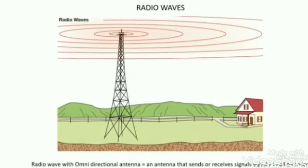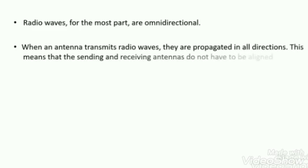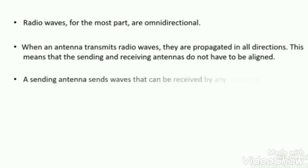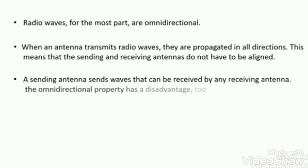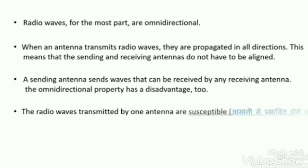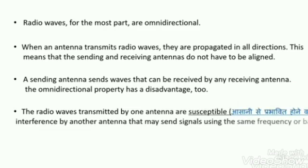The first type is radio waves. Radio waves are electromagnetic waves. When an antenna transmits radio waves, they are propagated in all directions in free space. Radio waves are generally omnidirectional, which means the sending and receiving antennas do not have to be aligned. Any receiving antenna can receive the signal because radio waves are transmitted in all directions.